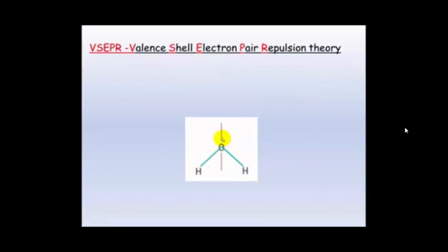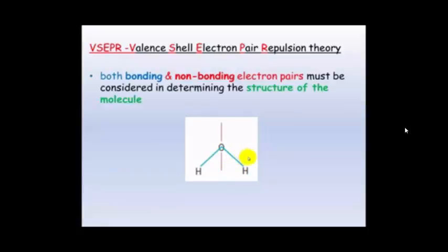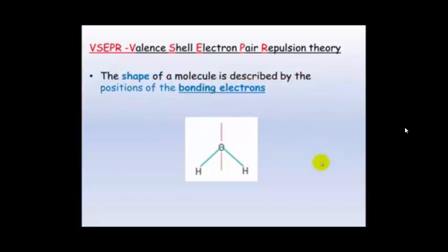If we have a look at water here, you'll see that water has two lone pairs of electrons and two bonding pairs of electrons. When looking at the structure of a molecule, it's important to consider both bonding and non-bonding pairs because they will all repel one another. However, when we describe the shape of the molecule, we only look at the position of the bonding atoms. So we ignore the non-bonding lone pairs. For water here, it shows a V shape.